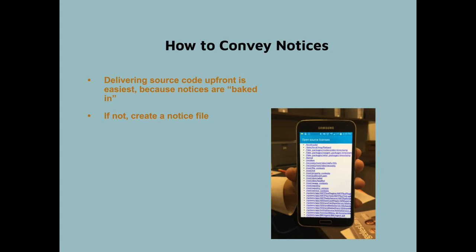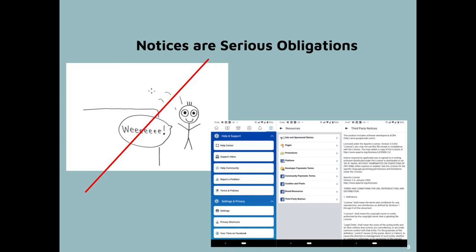Of course, for code under permissive licenses, you are not required to do this and you may not want to. If you don't deliver source code, you have some work ahead of you. The photo shows an example of an open-source notice file on a Samsung phone, circa 2017. This kind of notice file is necessary if you distribute binaries only, and it can be very long and difficult to read. Lack of compliance is particularly rampant in mobile apps. This picture shows an example of a notice file in a mobile app.